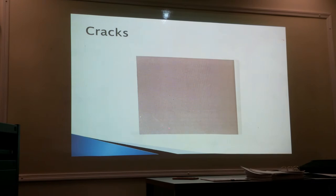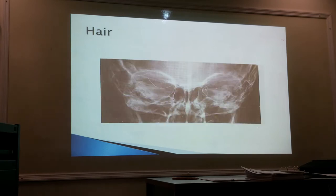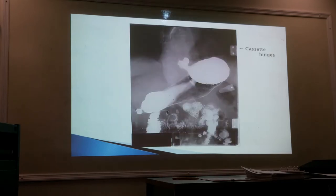There's a crack on this imaging plate that would show up possibly on an image. Here is some hair that's fallen off and adhered to an image receptor — it would appear as a light density on film. This is the back side of a cassette where somebody didn't place it tube-side correctly, so you can see the hinges of the image receptor showing up on the image.